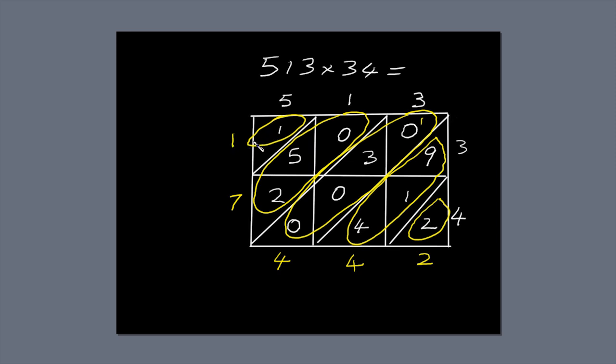Now we just read off the answer. 1, 7, 4, 4, 2. 513 times 34 equals 17,442.